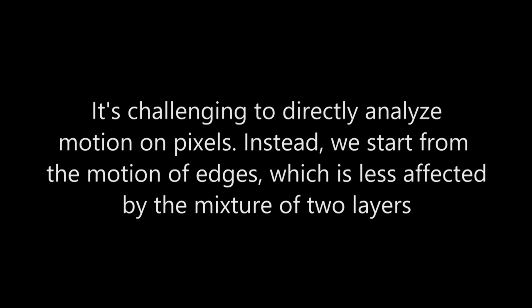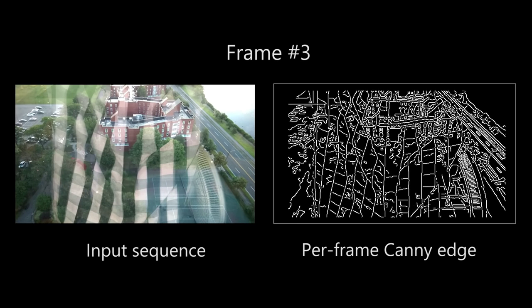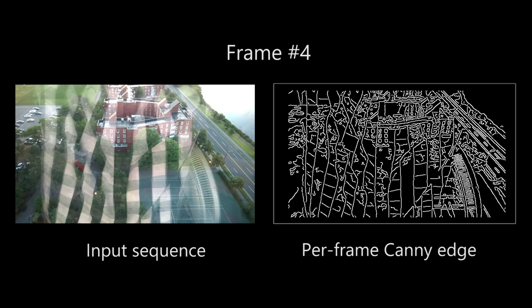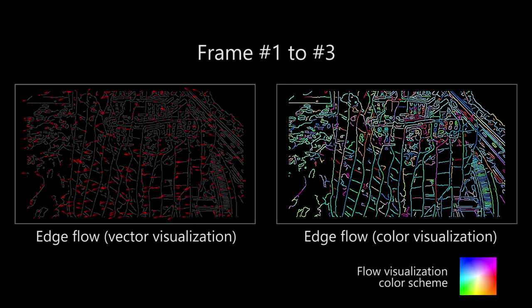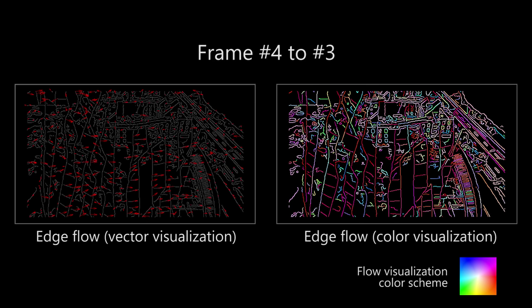We now describe our algorithm and demonstrate each step on the decomposition of five images containing reflection. It is challenging to directly analyze motion on pixels. Instead, we start from the motion of edges, which is less affected by the mixture of the two layers. We begin by performing Canny edge detection on the frames to extract the edges from each image. We then match edges in each of the frames to a reference frame — the middle frame in the image sequence. Here we show the flow field for each of the frames in the sequence.